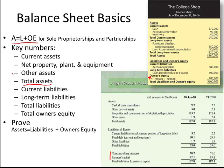Other assets can include things like long-term investments and intangible assets. Current liabilities are your current bills or responsibilities to others, and long-term liabilities are those bills or responsibilities that are not going to come due in the current year. Owner's equity is the ownership of the owners — a sole proprietor or a partner. To prove that assets equal liabilities: our assets are $360,000, which equals total liabilities of $180,000 plus owner's equity of $180,000. The balance sheet does balance.